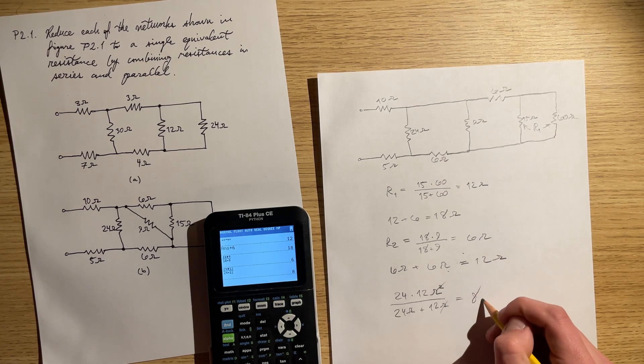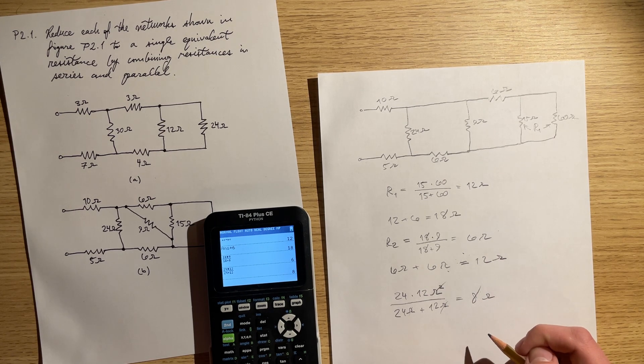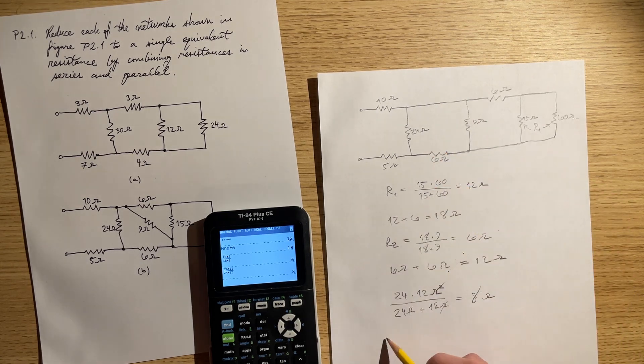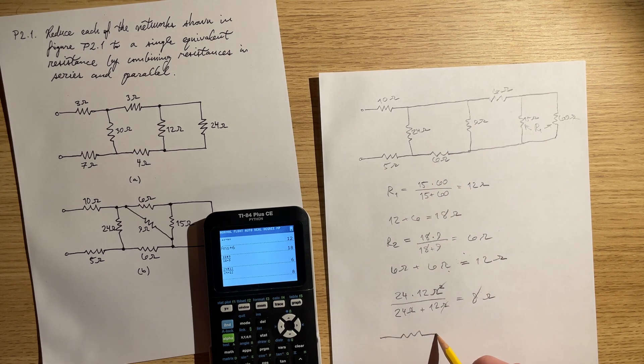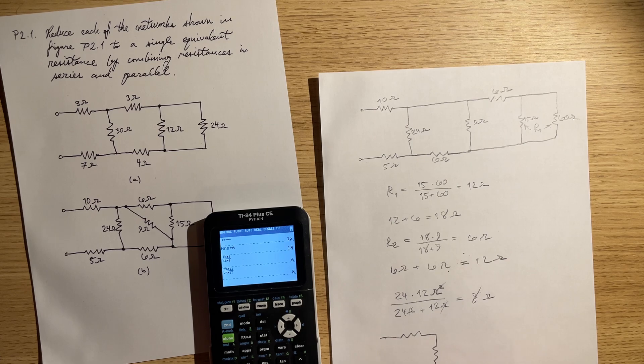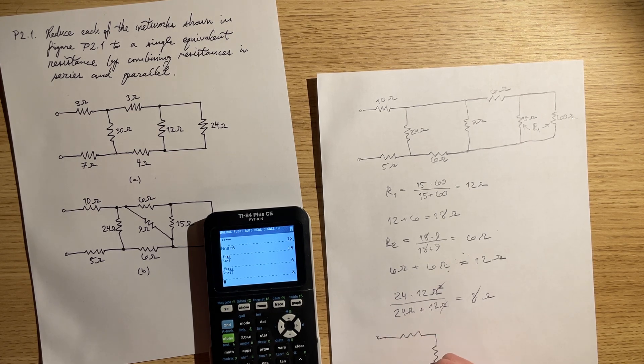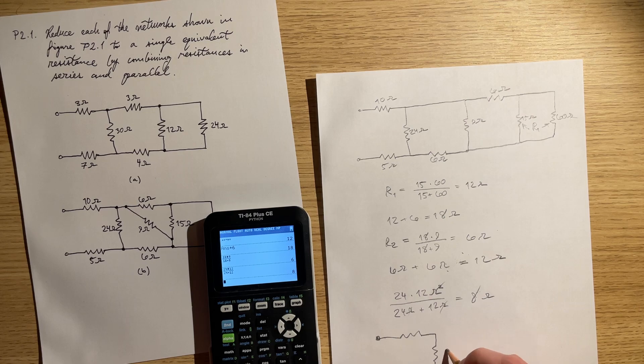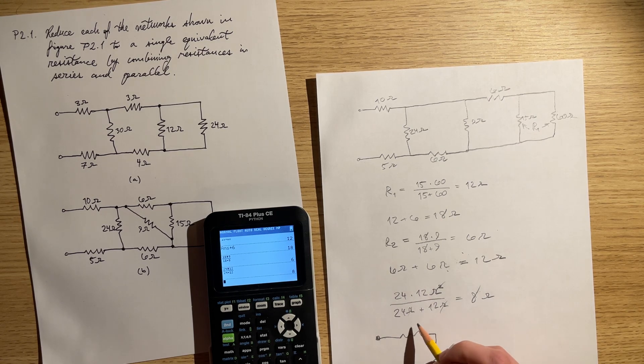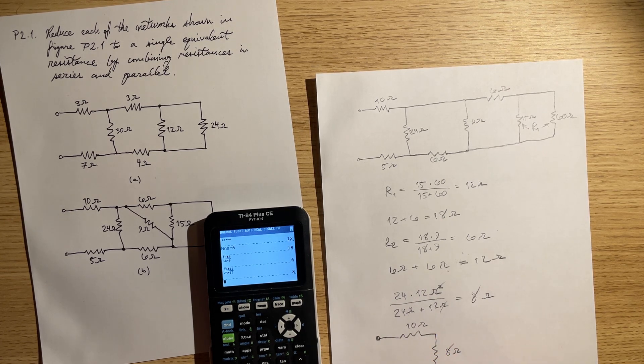We get 8 ohms now. So now we're finally at this last circuit with this being 8 ohms and this being 10 ohms, while this is 5 ohms.